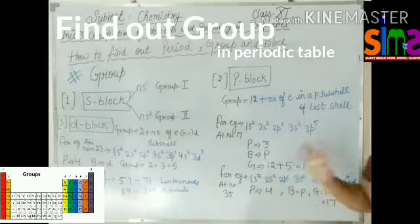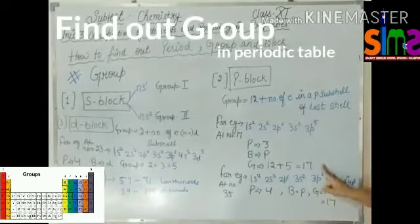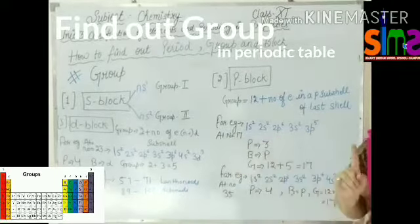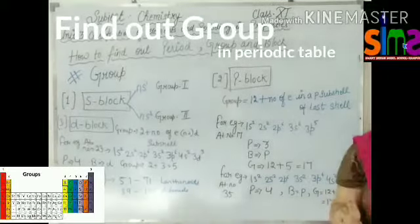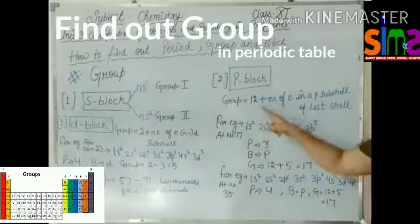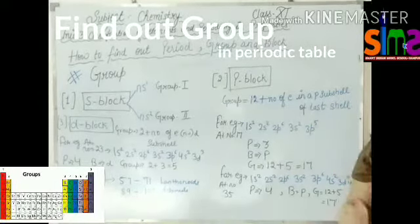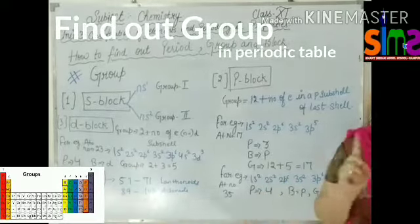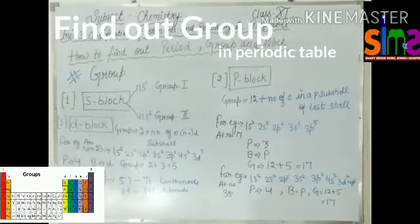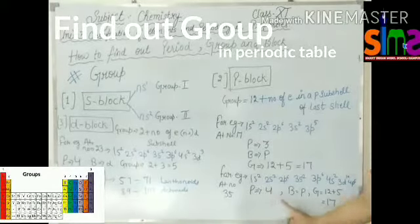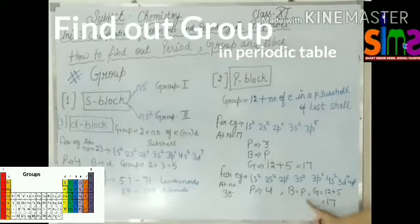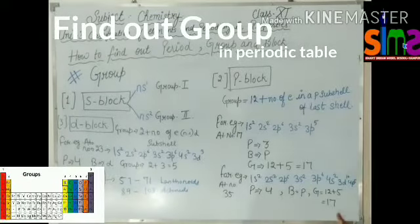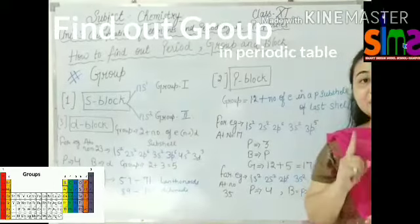तो 12 + 5 = 17 — atomic number 17 (Chlorine) Group 17 में present है। P-block का formula है: 12 plus number of electrons in P sub-shell। अगला example: atomic number 35 — पूरा configuration करिए, block find out करिए, P-block आएगा, तो 12 + 5 = 17। Chlorine और Bromine दोनों Group 17 में present होते हैं।